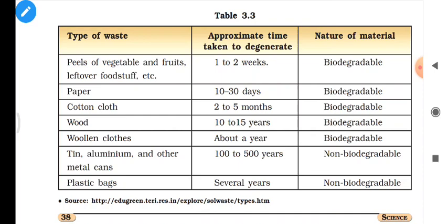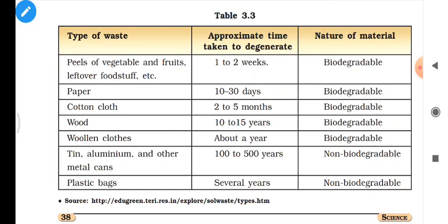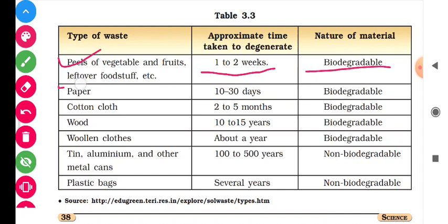Which type of waste takes time for degradation? First type of waste: peels of vegetables, fruit peels, and leftover food stuff — these take approximately 1 to 2 weeks to degrade. That means these substances mix into the soil — they are biodegradable. Paper takes 10 to 30 days — it is also biodegradable.